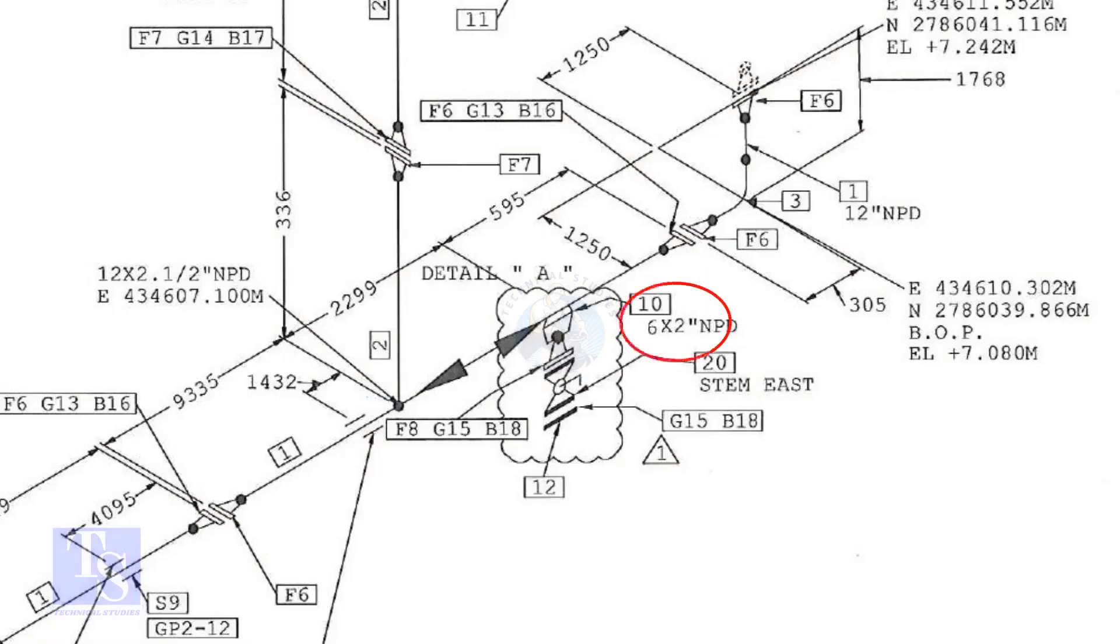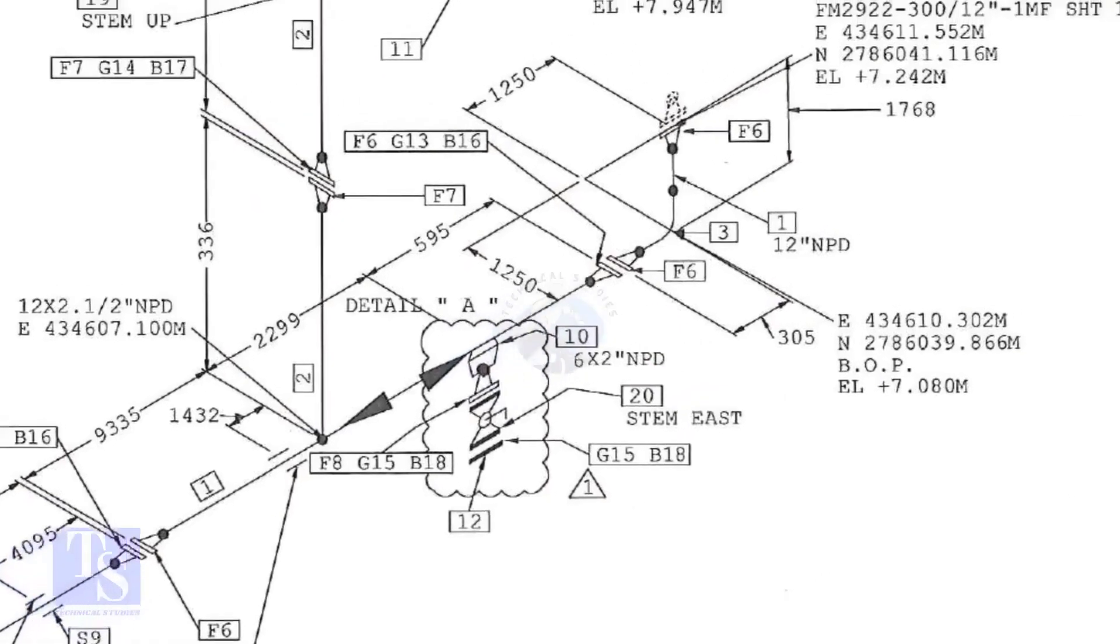In this drawing, the size of the weld-olet is 6 inch into 2 inch. Let us check what is item number 10 in the description.